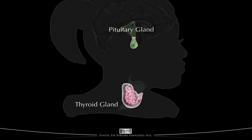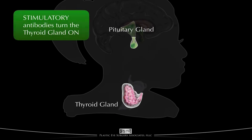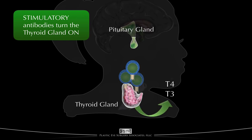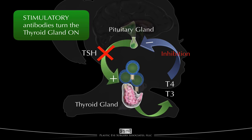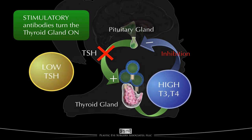You'll remember this picture from section one of this series, with the thyroid gland at the base of the neck and the pituitary gland at the base of the brain. Stimulatory autoimmune antibodies turn the thyroid gland on. Here you see the autoimmune antibodies binding to the TSH receptors on the thyrocytes in the thyroid gland, increasing T4 and T3 hormone production, which in turn feeds back onto the pituitary, decreasing TSH production. However, even though TSH production is turned off, the autoimmune antibodies already bound to the TSH receptors keep stimulating the production of T3 and T4. The result is abnormally high blood levels of T3 and T4 and very low levels of TSH.